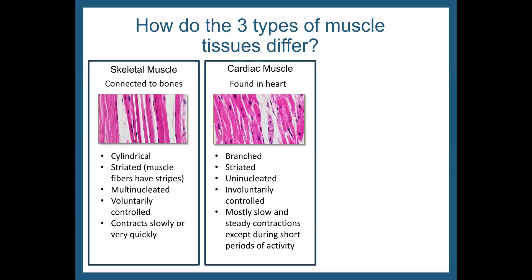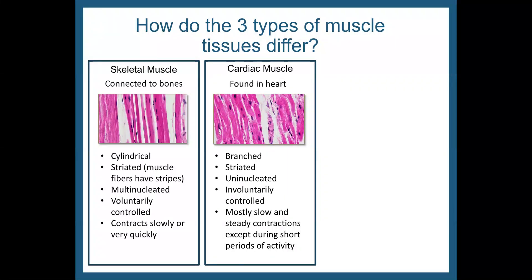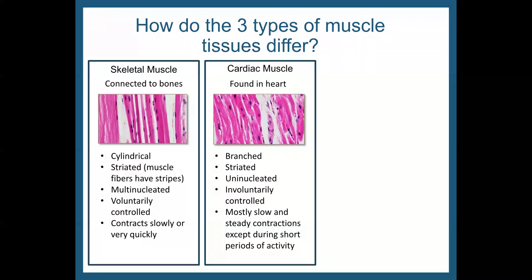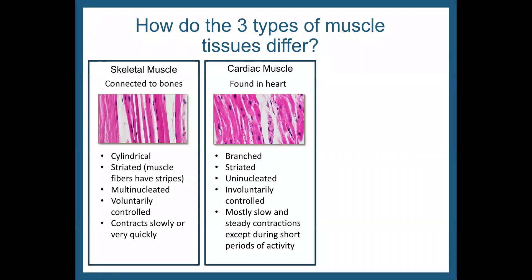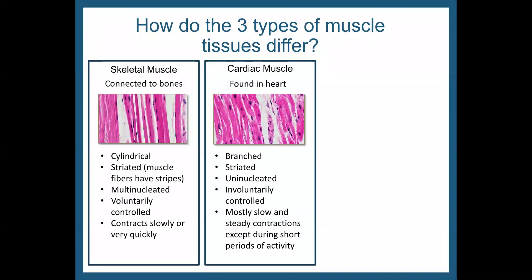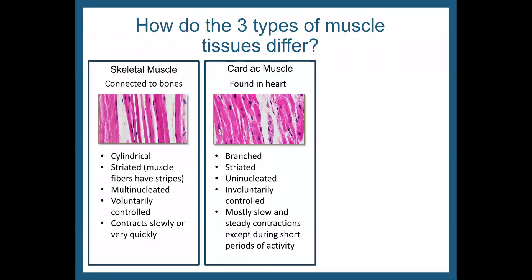Then you have cardiac muscle tissue, and this is found in your heart. This muscle tissue is branched, so it's not like one cylinder — it has branches on it. It is also striated, so it looks like it has stripes. It is uninucleated, meaning there's only one nucleus within it. This is involuntarily controlled, so you don't have direct control over the tissues making up your heart. This tissue is mostly slow and has steady contractions except during short periods of activity.